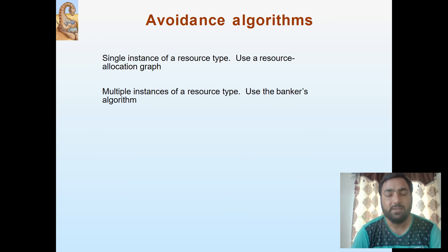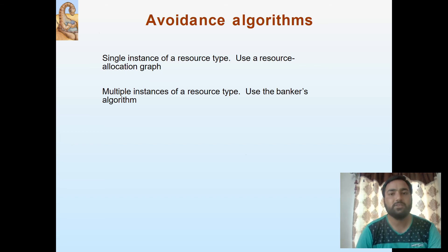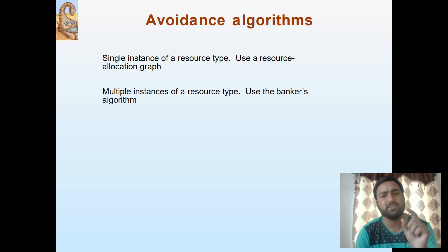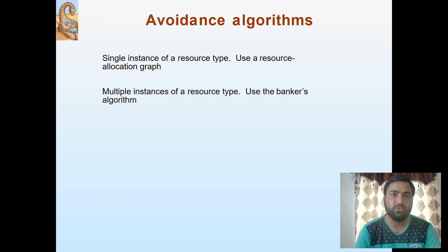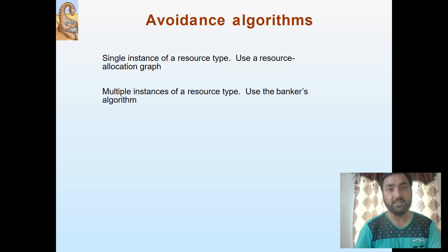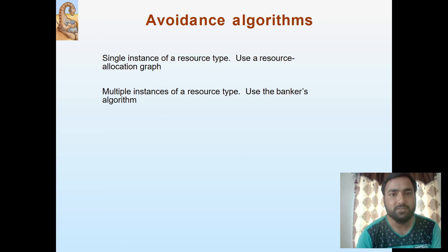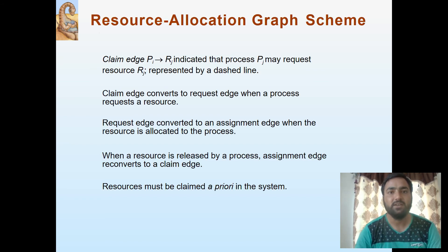Let's discuss avoidance algorithms. There are two avoidance algorithms. First, if there is a single instance of a resource type, then we use a resource allocation graph. But if there are multiple instances of resources, then we have to use the Banker's algorithm. Let's proceed with the resource allocation graph.